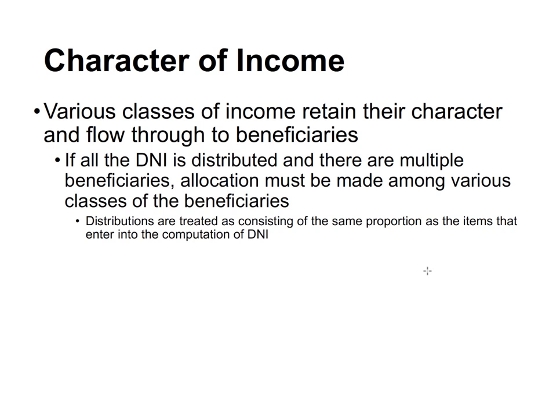Regarding the character of income: various classes of income retain their character and flow through to the beneficiaries, similar to a flow-through entity with separately stated items. If all the DNI is distributed and there are multiple beneficiaries, allocation must be made among the various classes of beneficiaries.